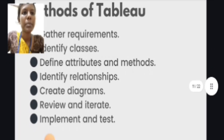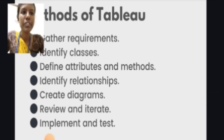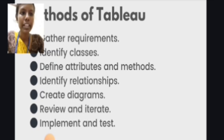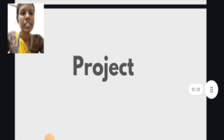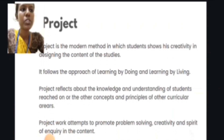Then methods of classroom modeling: gather requirements, identify the classes, define attributes and methods, then identify relationships, create diagrams, then review and iterate, implement and test. Then project: a modern method in which students show creativity in designing the content of their studies.